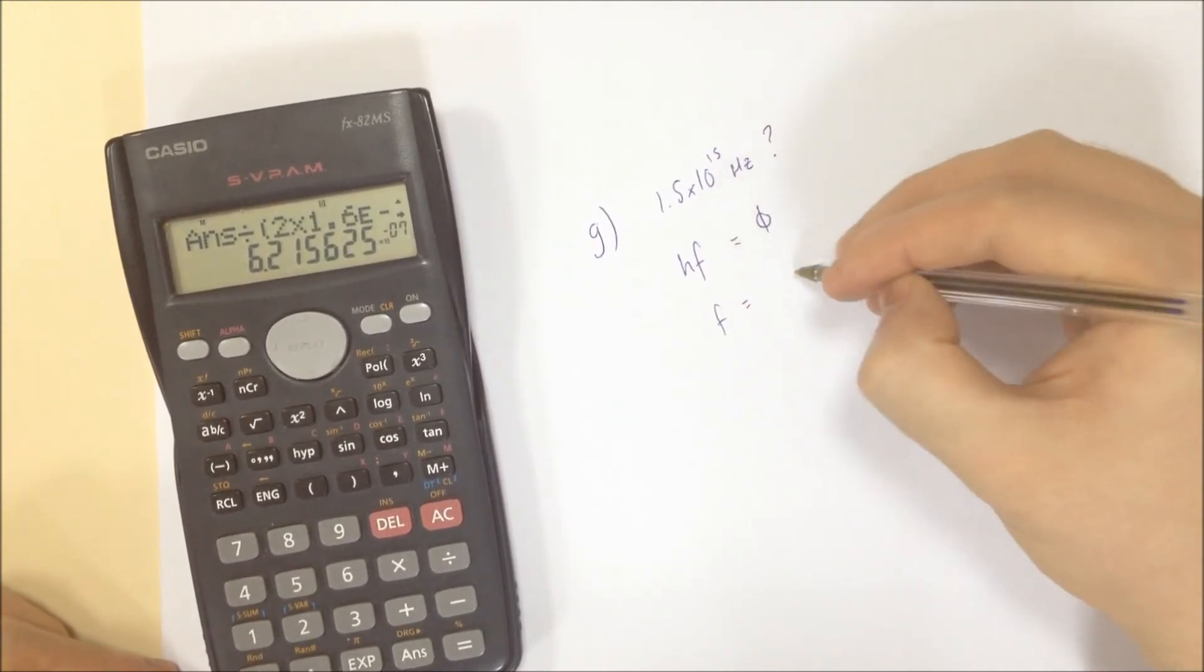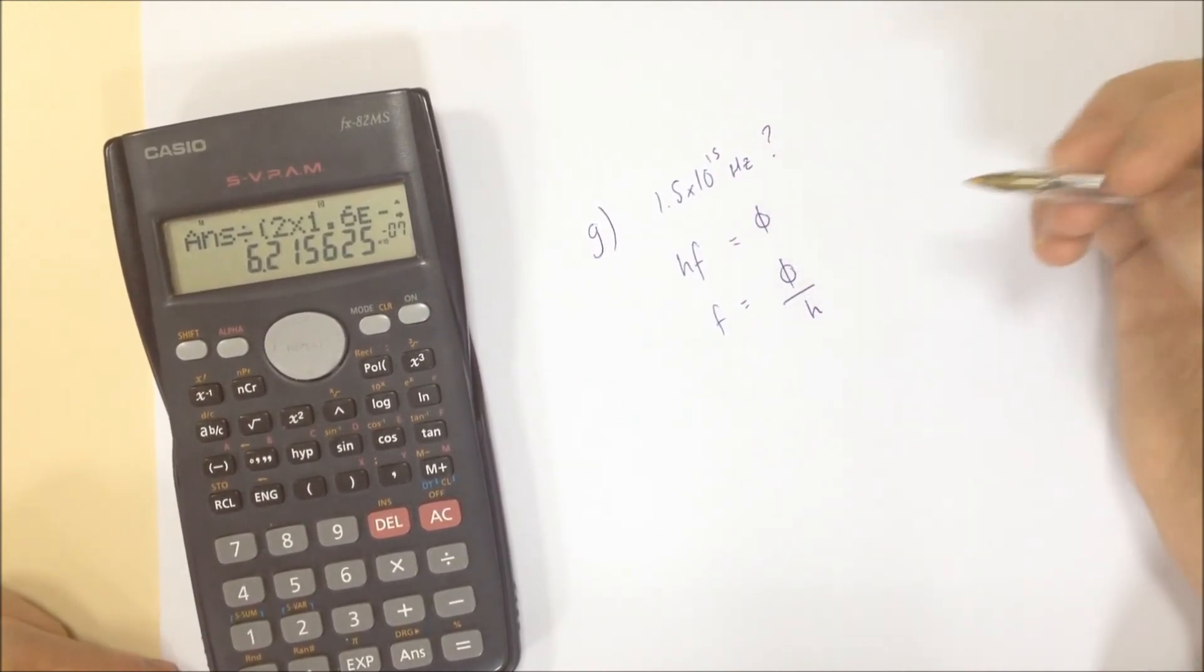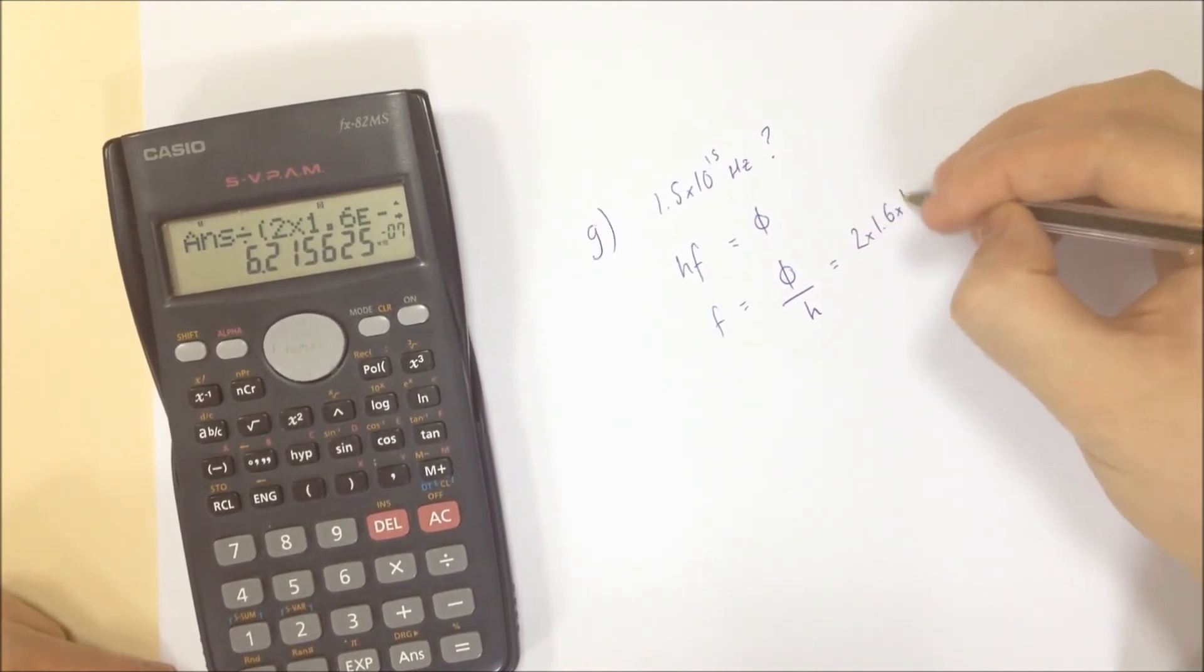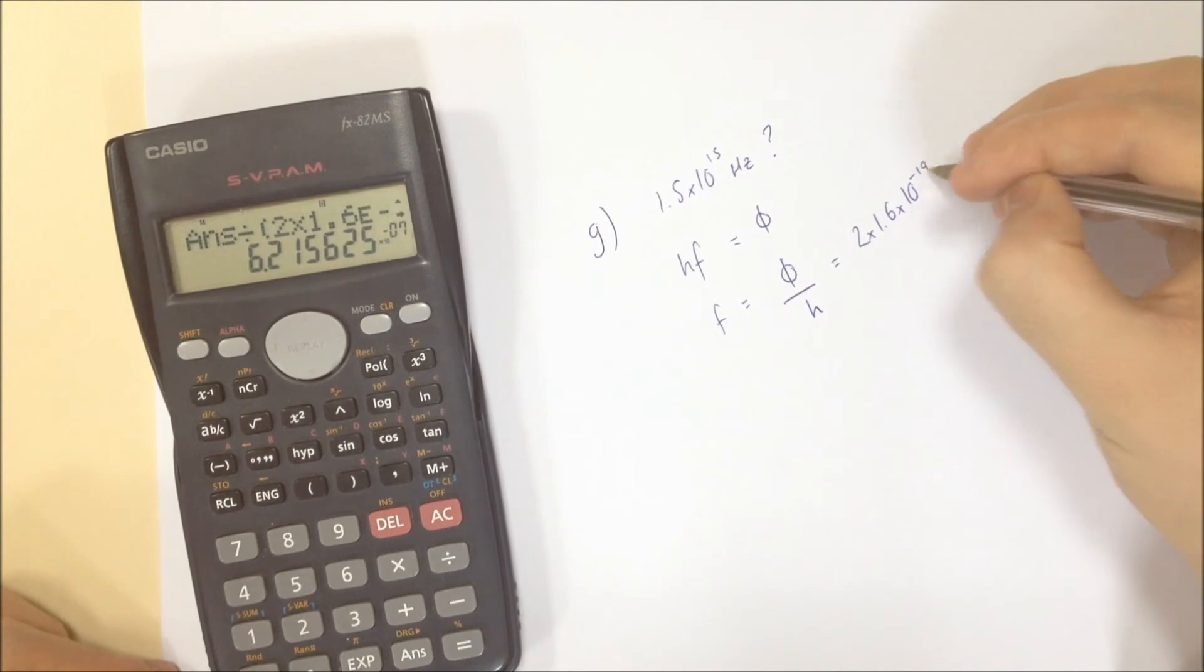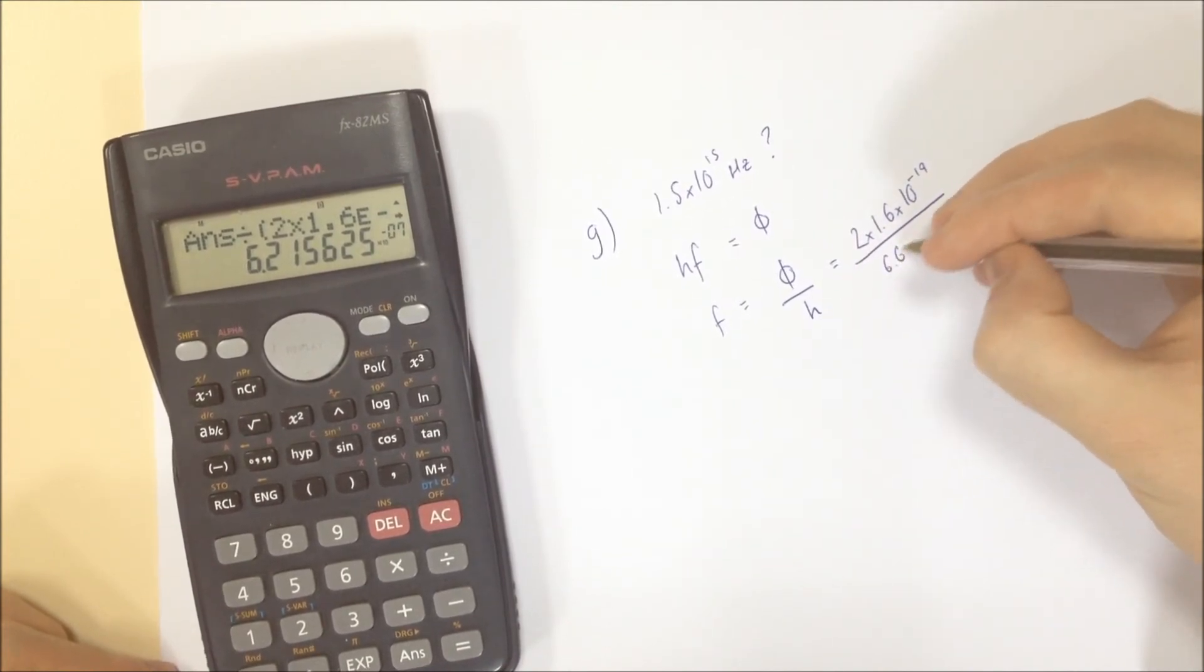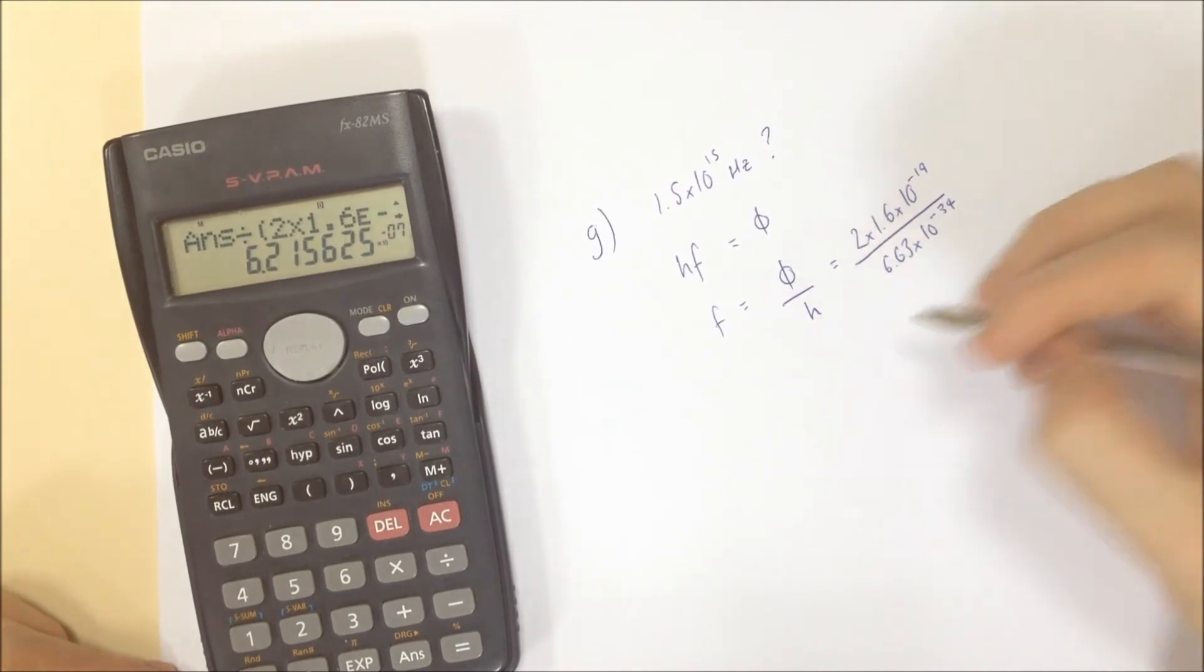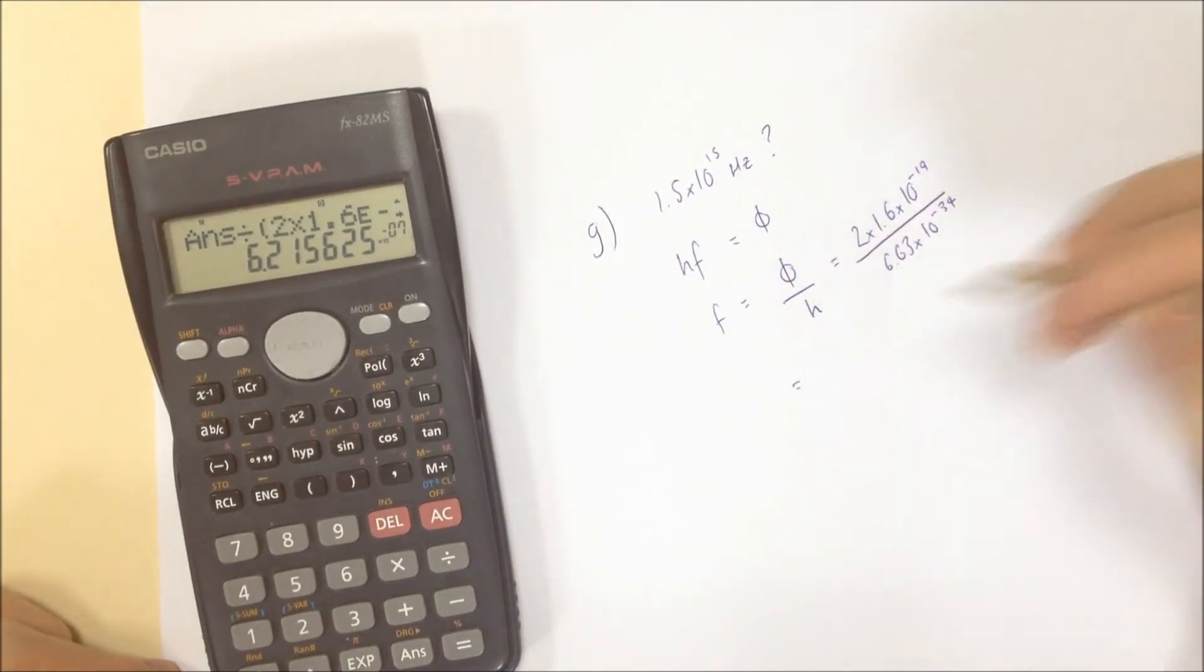F equals phi over H. This was 2 times 1.6 times 10 to the minus 19. This was 6.63 times 10 to the minus 34. Check me out showing my work in like every stage. Like it's almost like doing that reliably gets you the correct answer.